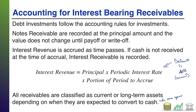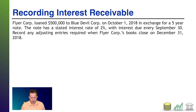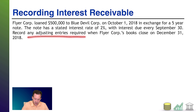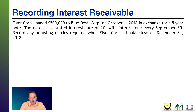Let's see it in action. Flyer Core loaned five hundred thousand dollars to Blue Devil Core on October 1st, 2018 in exchange for a five-year note. The note has a stated interest rate of two percent with interest due every September 30th. You can presume it's an annual percentage rate — it's due every year on September 30th, another indicator this is an annual rate. We're asked to record any adjusting entries required when Flyer Core's books close on December 31, 2018.